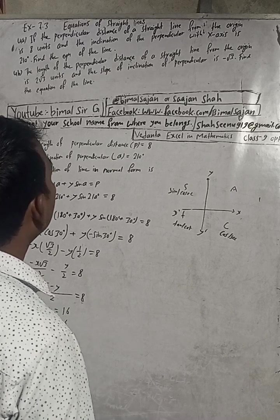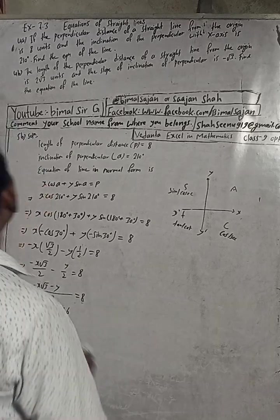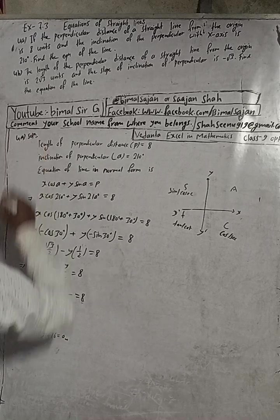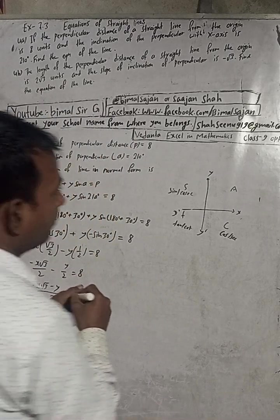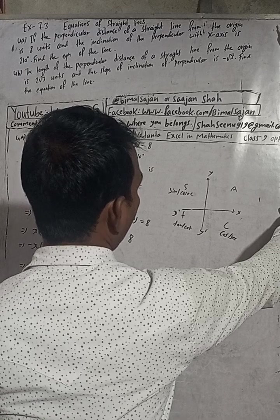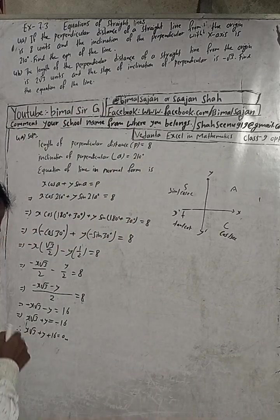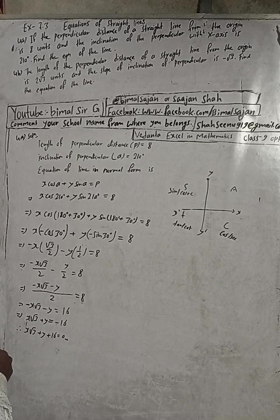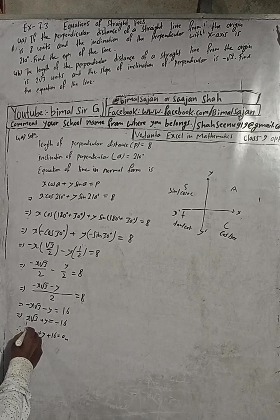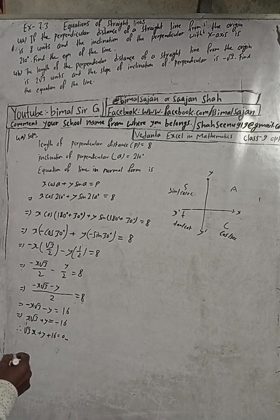This is the solution of question 4a. The answer is: √3·x plus y plus 16 equals 0. This is the required equation of the line.